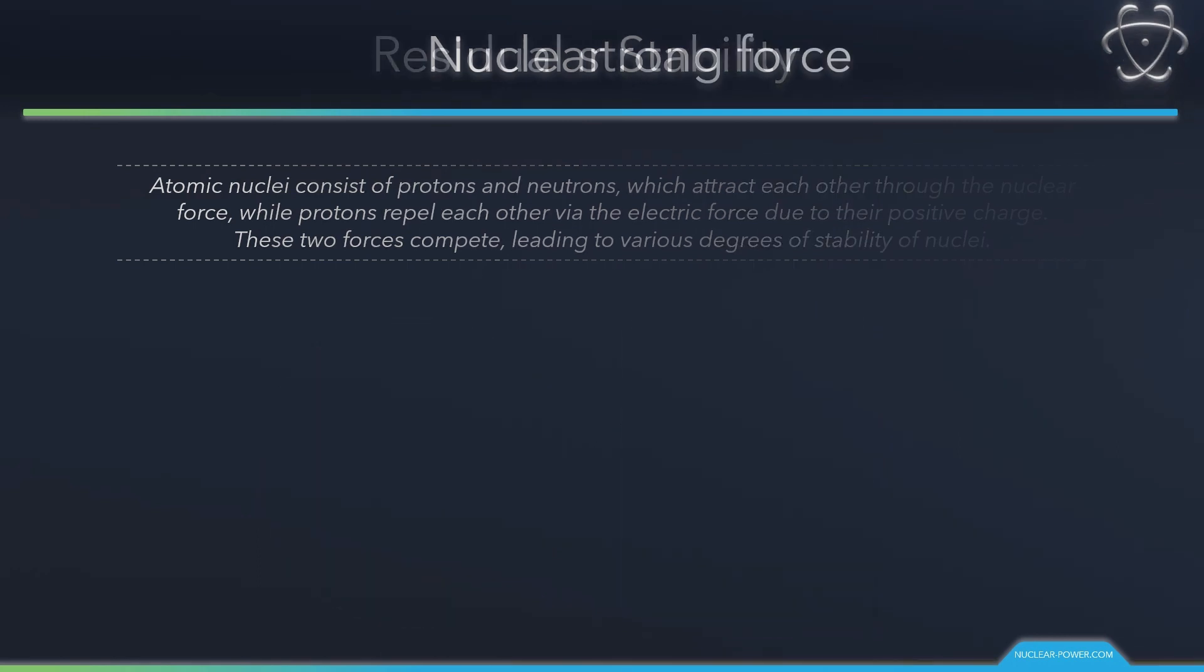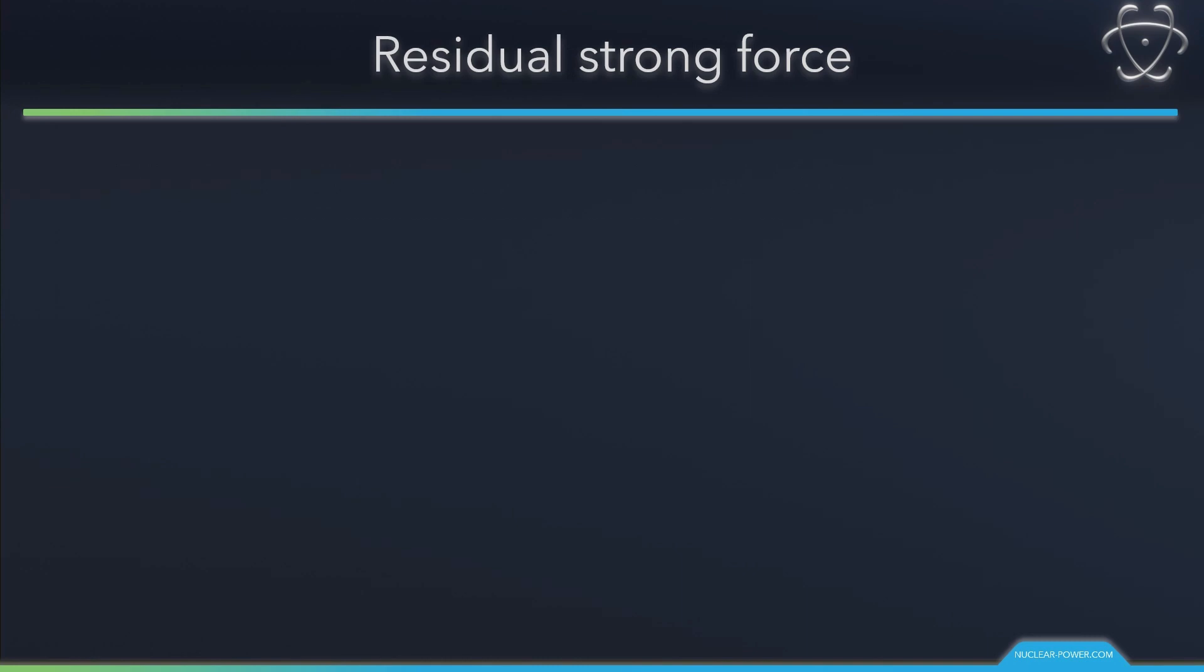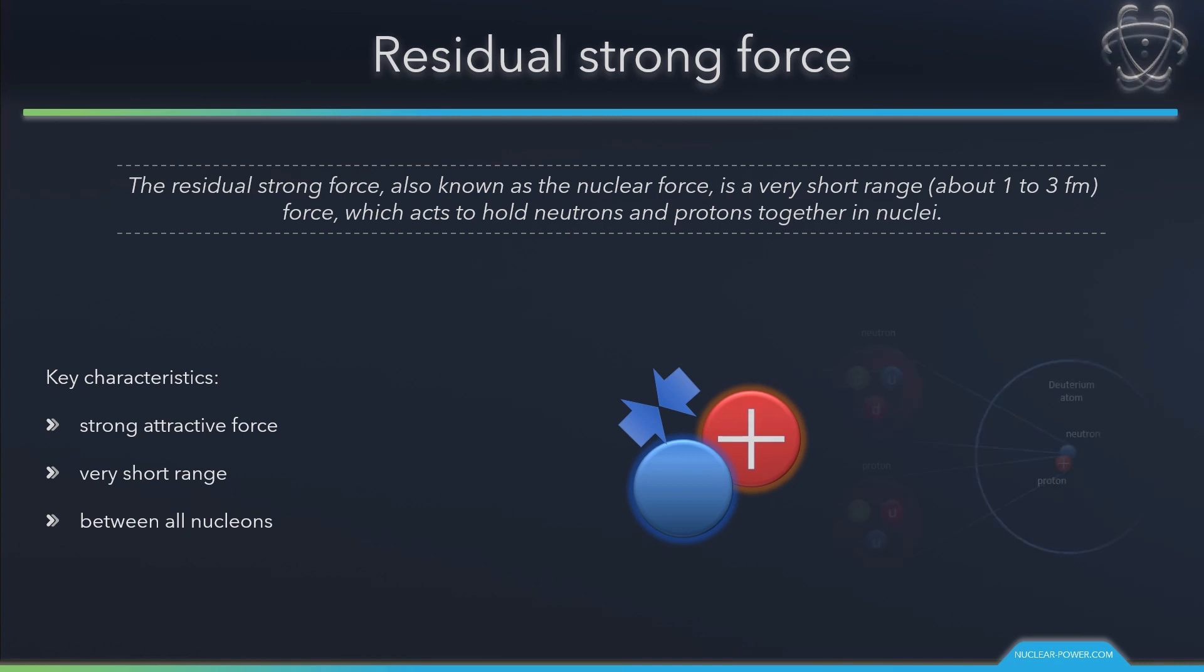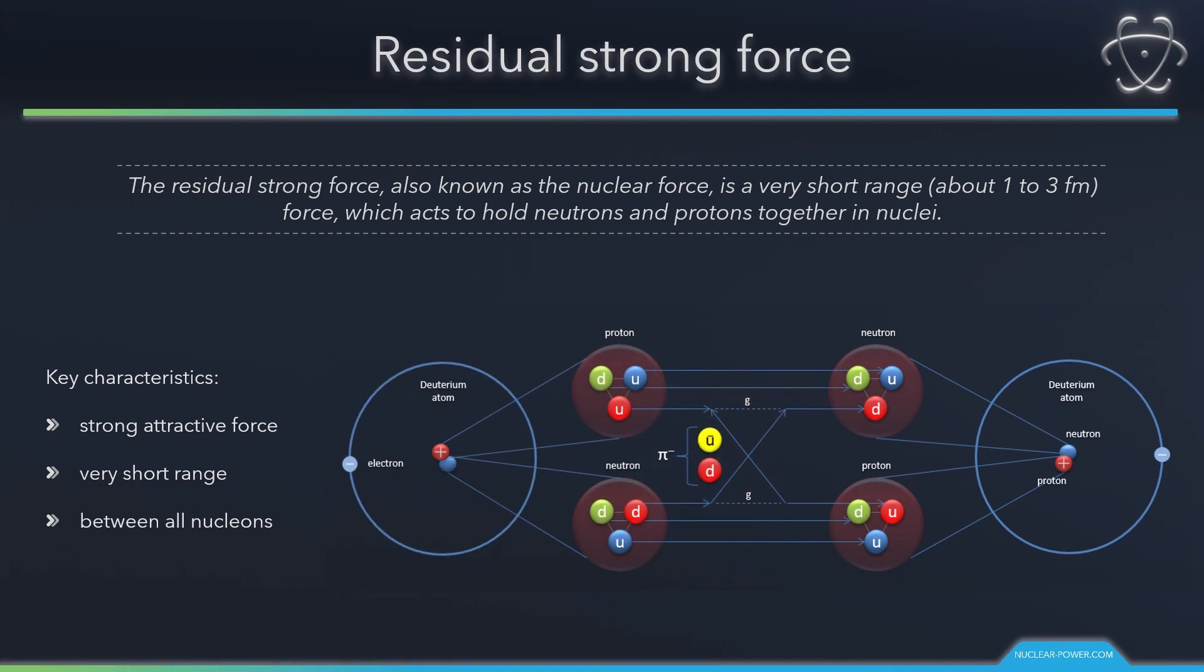The residual strong force, also known as the nuclear force, is a very short-range force which acts to hold neutrons and protons together in nuclei. The residual strong force acts indirectly through the virtual mesons, which transmit the force between nucleons. As for the fundamental strong force, the residual force does diminish rapidly with distance and is thus very short-range. Therefore, the residual strong force cannot reach outside the nucleus.